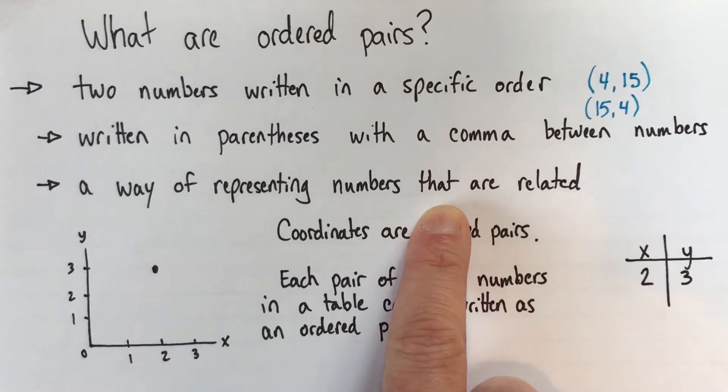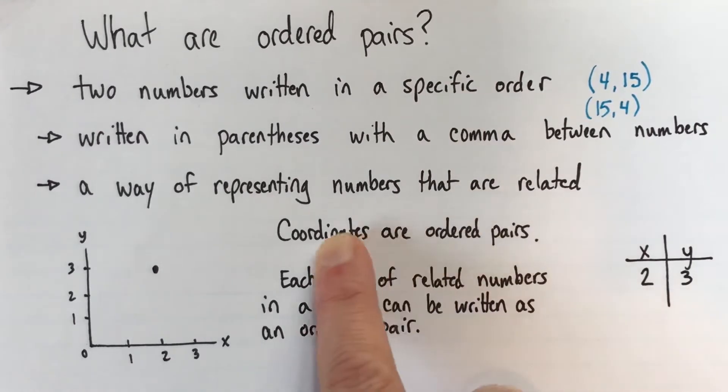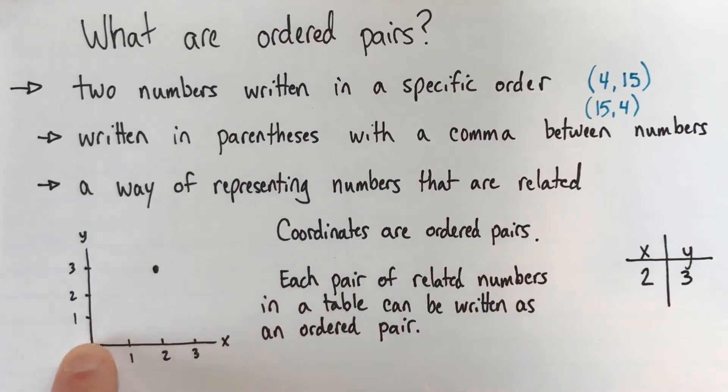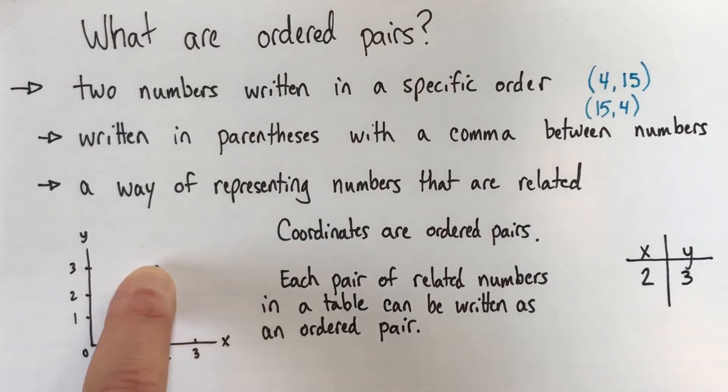And here are two specific examples of where you might get ordered pairs crop up. Coordinates are ordered pairs. So, here I have this point here on this graph, and this point, the x value is 2, and the y value is 3.